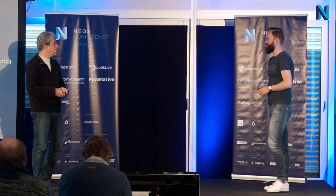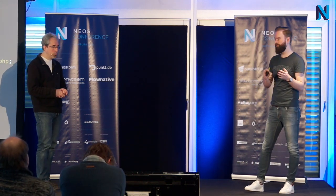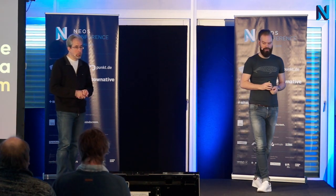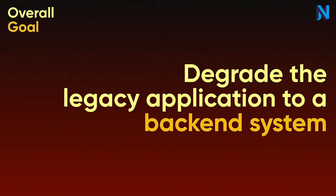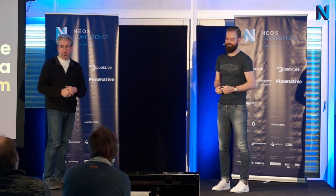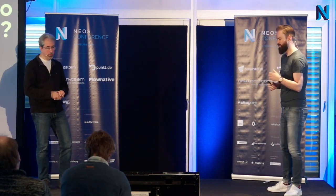We had a basic setup and the ultimate goal would be to get rid of the old software completely, which we knew would take a long time even in steps. So we defined a major milestone first: degrading the legacy application to a backend system. That essentially means we don't want the legacy system involved in any client-side requests anymore — it should be completely internal. That way we don't have to expose it to the internet, which is good because of security issues with legacy software, particularly if you want to keep the goal of not touching it.